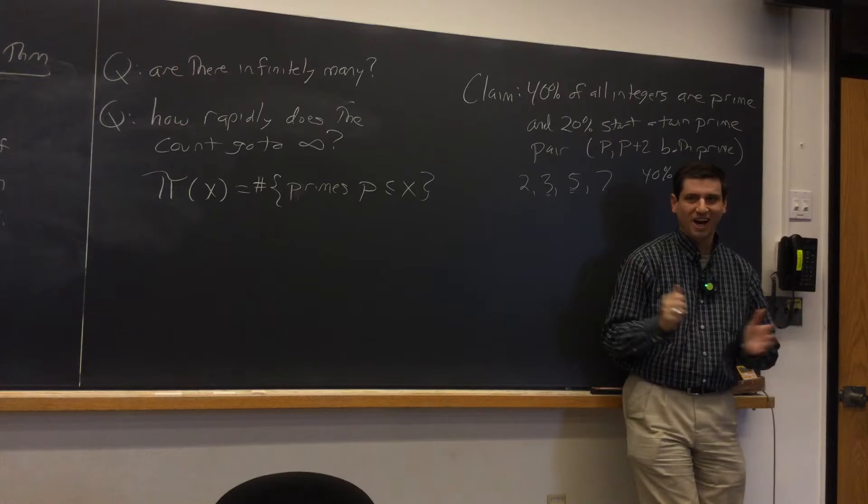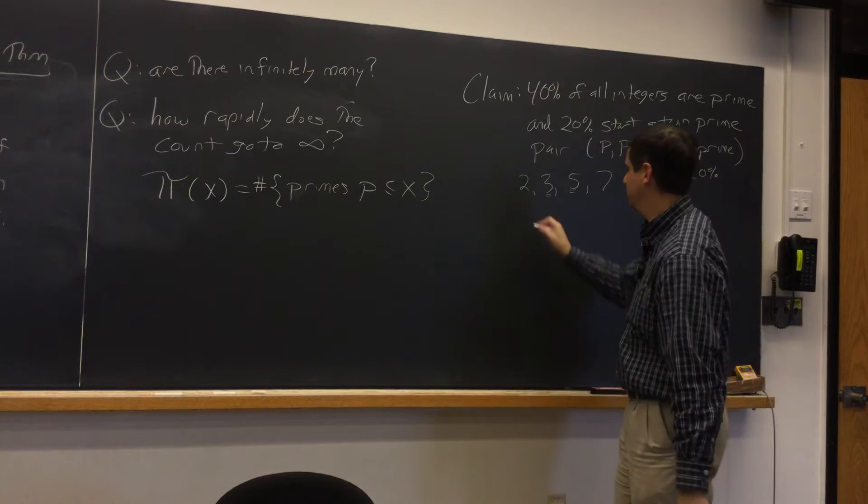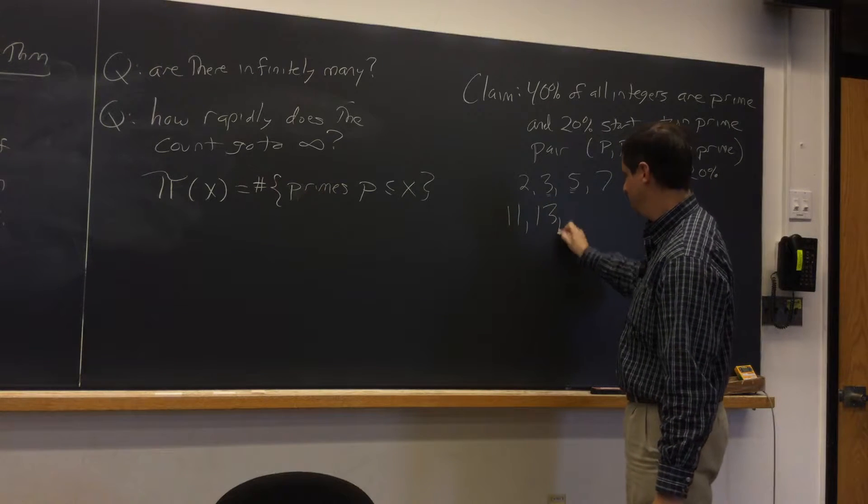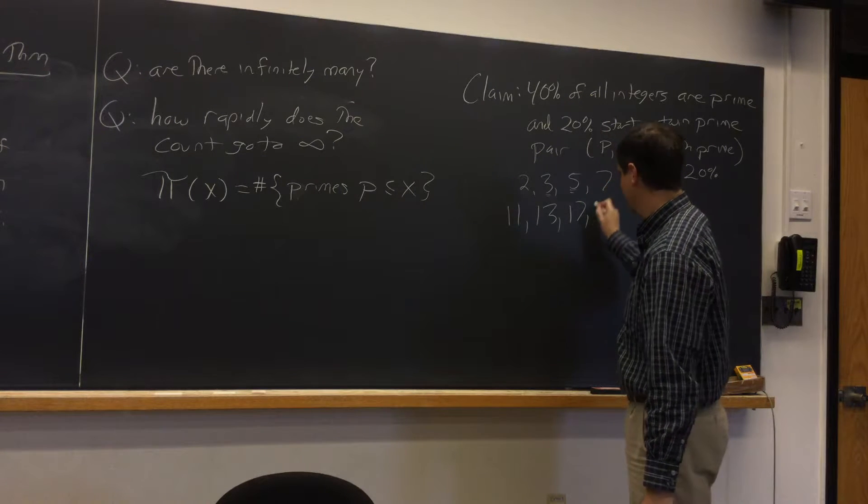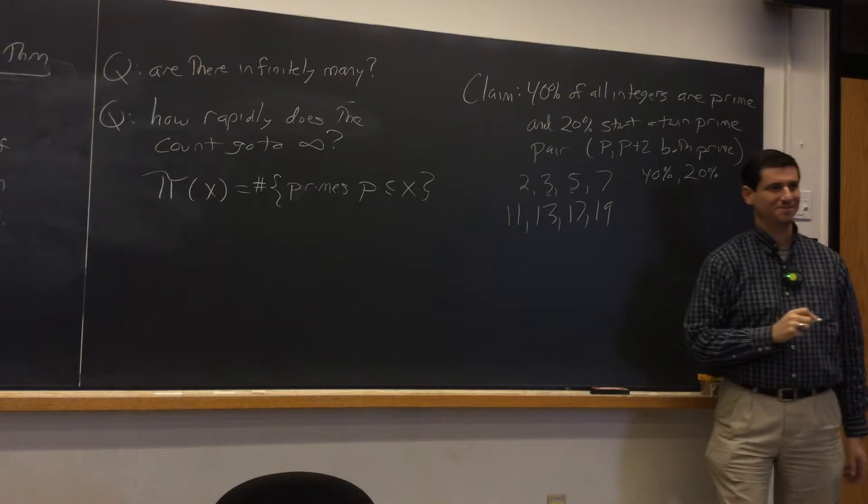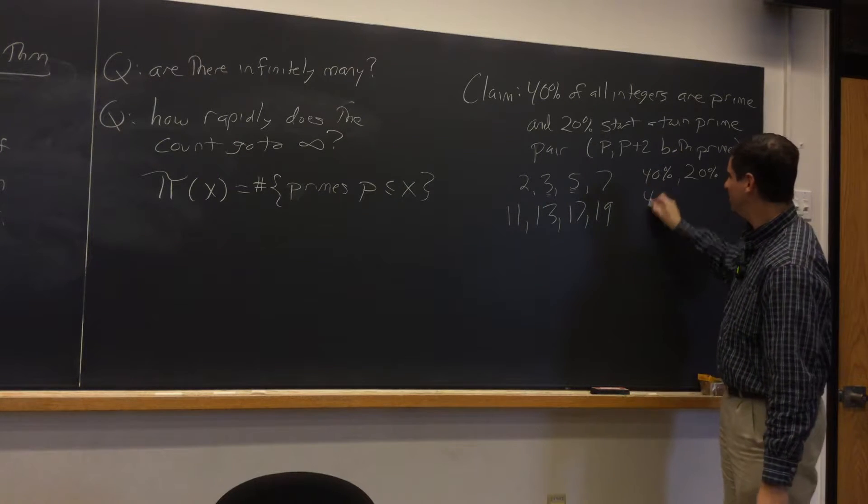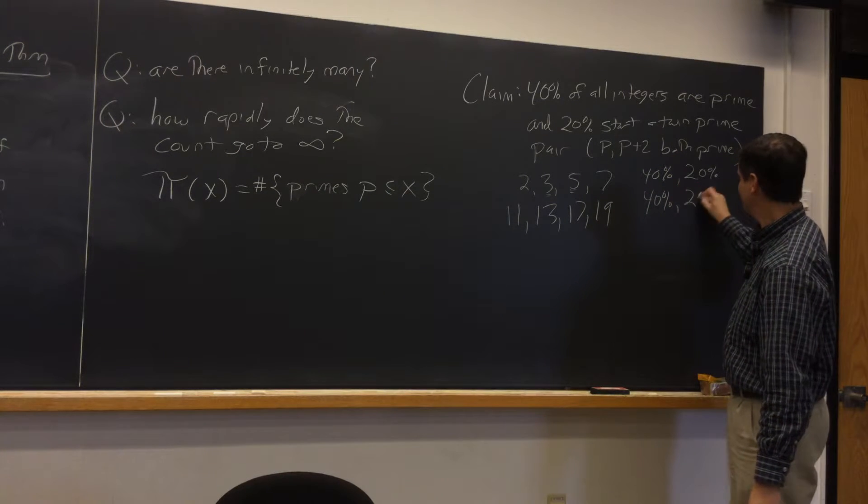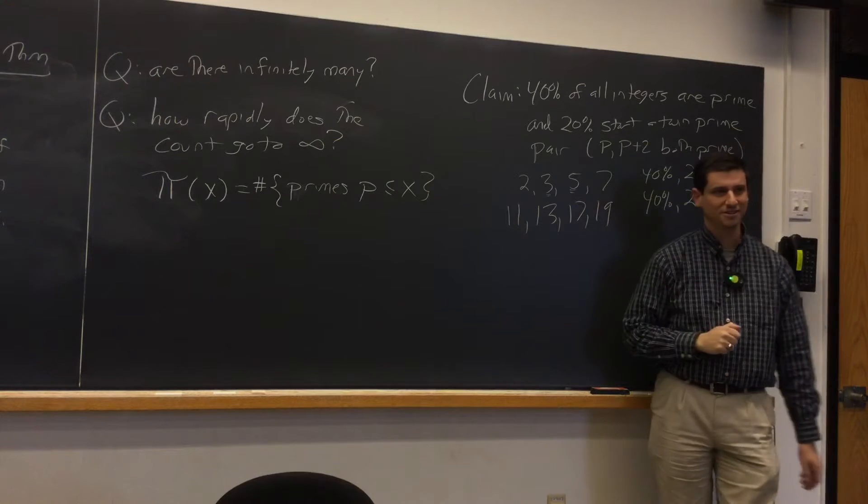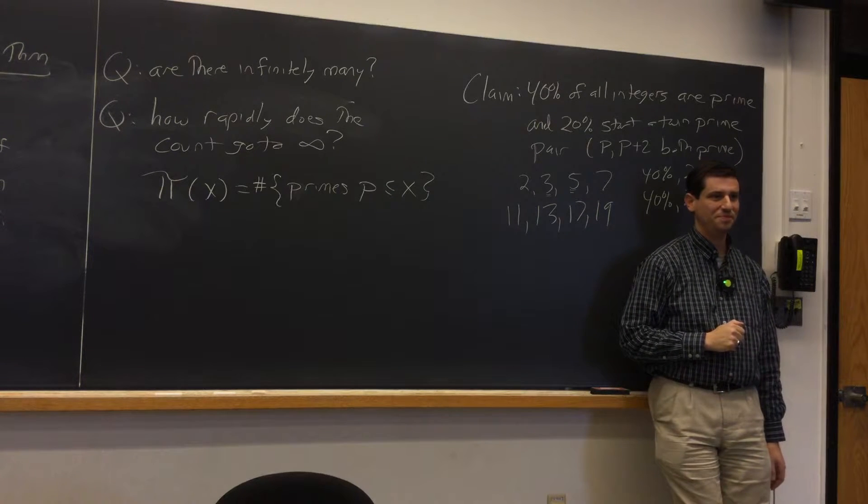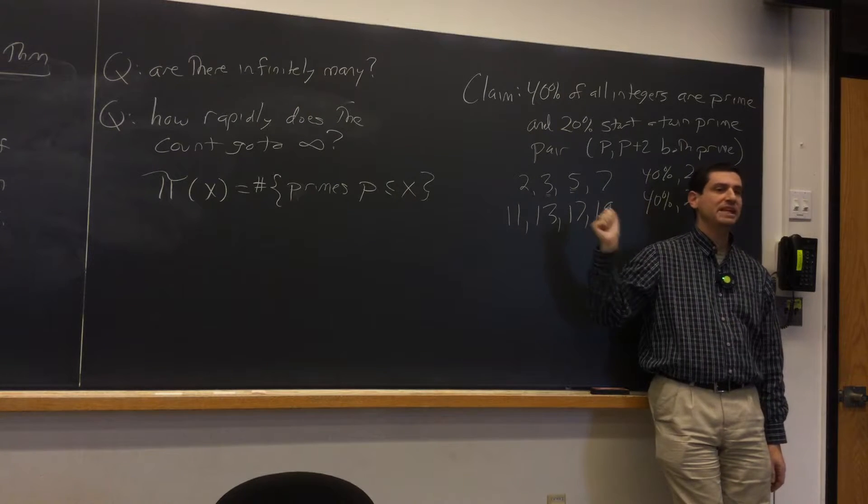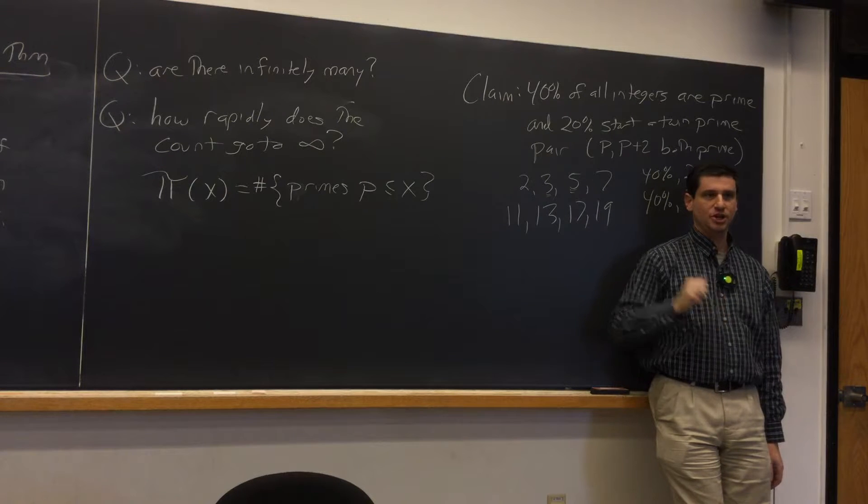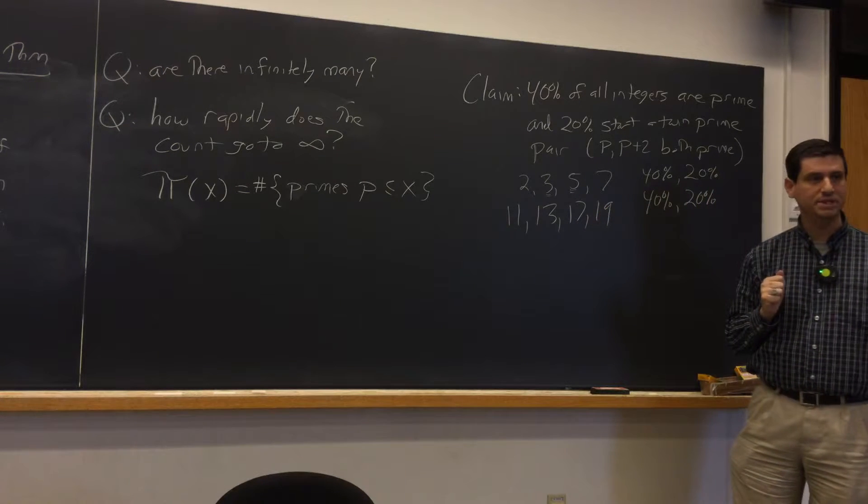All right. A few people look skeptical. Fine. I will calculate up to 20. 11, 13, 17. The calculation is getting a little harder. 19. I doubled the range. Look, it's still 40%. It's still 20%. You need to know how rapidly things converge. Small examples can be quite misleading.